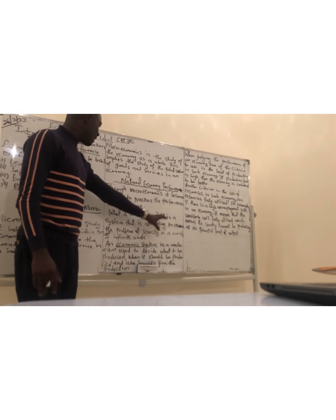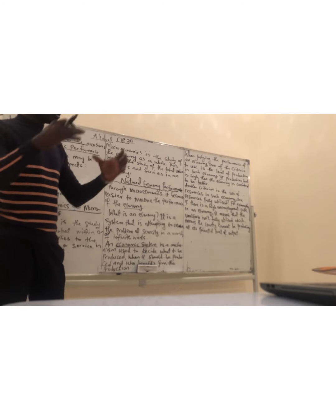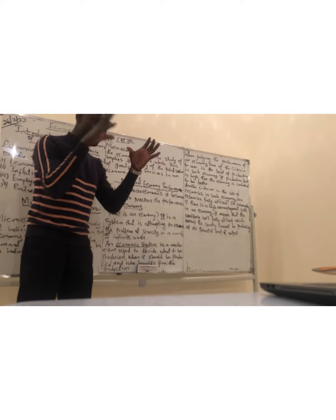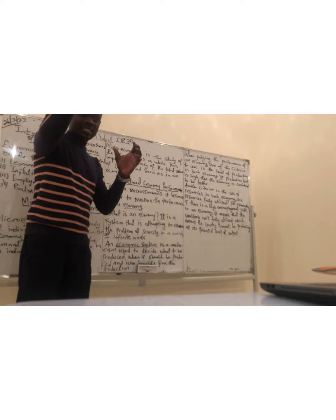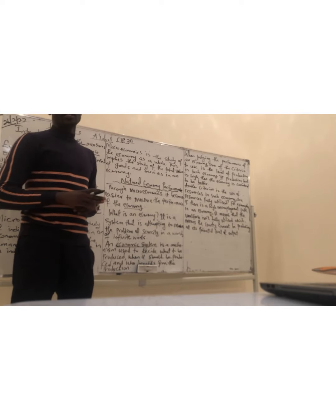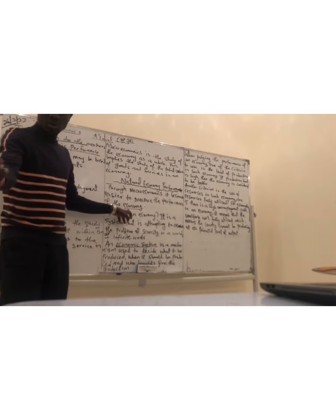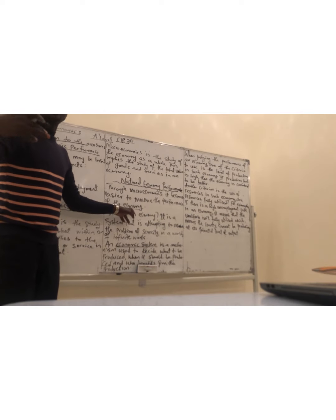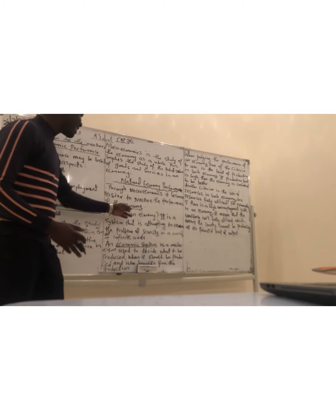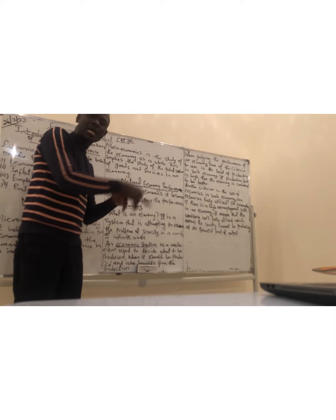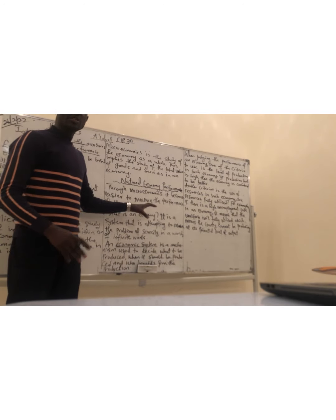So what is an economy itself? It is a system that is attempting to resolve the problem of scarcity in a world of infinite wants. The problem of the economy is scarcity — the wants of individuals and households are infinite. So that system trying to solve the problem of scarcity in the world of infinite wants is what we call an economy, which is a country. Each country will want to try to ensure that it solves the scarcity problem.